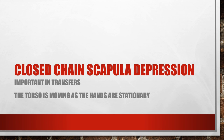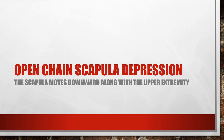Closed-chain scapular depression — where the hands are fixed and the torso moves — is clinically important for OTs because it is necessary for transfers. In closed-chain movement, the distal part of the extremity is not moving but the body is. In open-chain, the distal extremity moves while the body stays fixed. In open-chain scapular depression, if the arms hang at the sides and you push the hands down, the pecs, lower traps, and lats all work to move the hands downward.